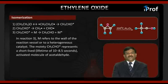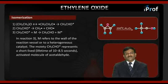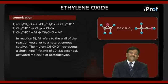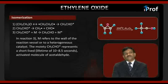In reaction 3, M refers to the wall of the reaction vessel or to the heterogeneous catalyst. The moiety CH₃O radical represents a short-lived species with a lifetime of around 10 to the power of 8.5 seconds.